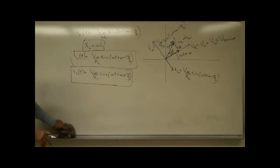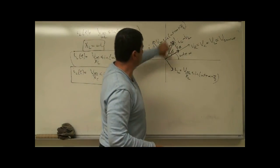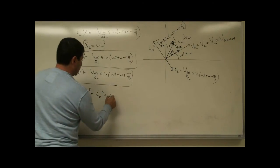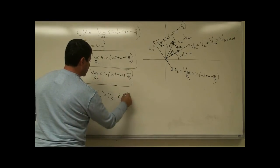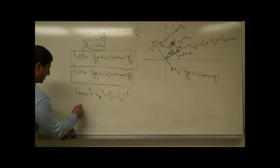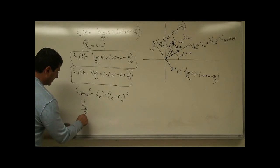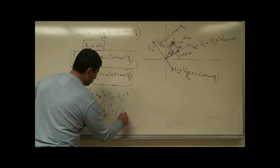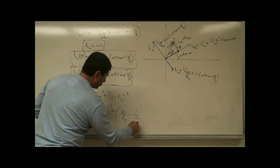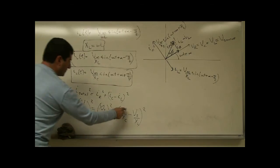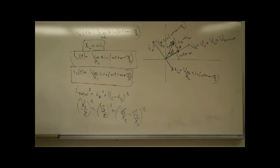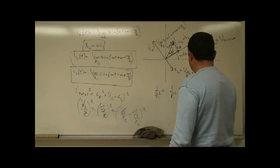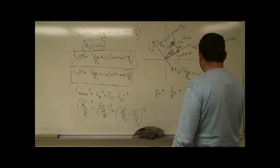The magnitude of the total current is found using: I_total² = IR² + (IC − IL)². Substituting V_source/R, V_source/XC, and V_source/XL respectively, and canceling V_source, we get the impedance definition for a parallel circuit: 1/Z² = 1/R² + (1/XC − 1/XL)².